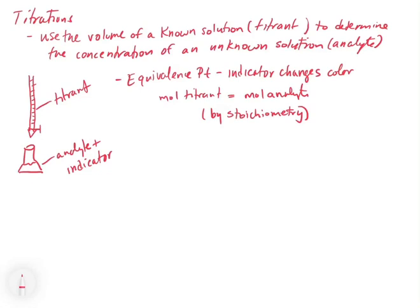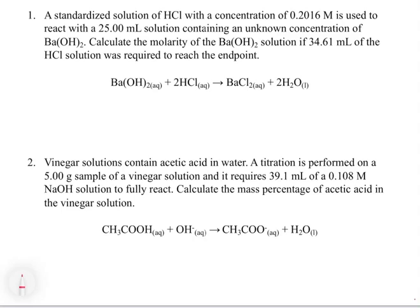Let's take a look at some sample problems involving titrations. A standardized solution of HCl with a concentration of 0.216 molar is used to react with a 25 mL solution containing an unknown concentration of barium hydroxide. Calculate the molarity of barium hydroxide if 34.61 mL of the HCl solution was required to reach the endpoint. In this case we'll need twice as much HCl to react with the barium hydroxide because of the two-to-one mole ratio. We'll use our mole flowchart and mole ratio to solve this.